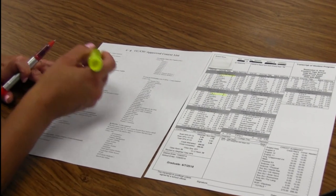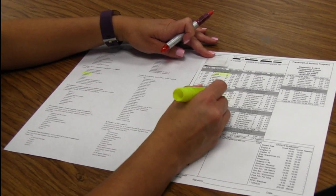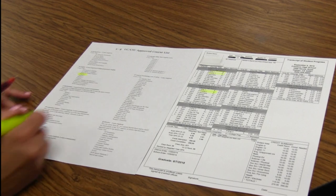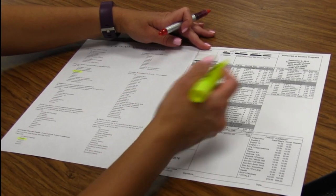So English one is complete, so you can go ahead and highlight that. French one with an A, so French is complete for that first year. Geometry and Geometry.